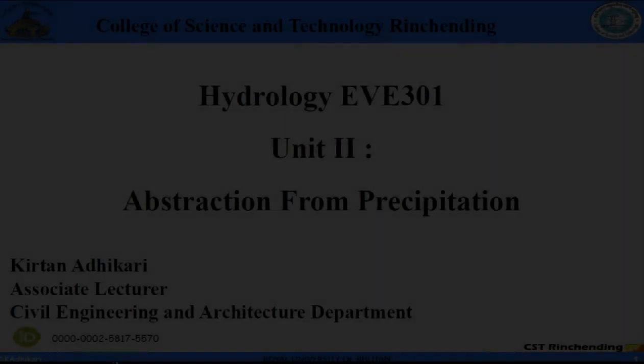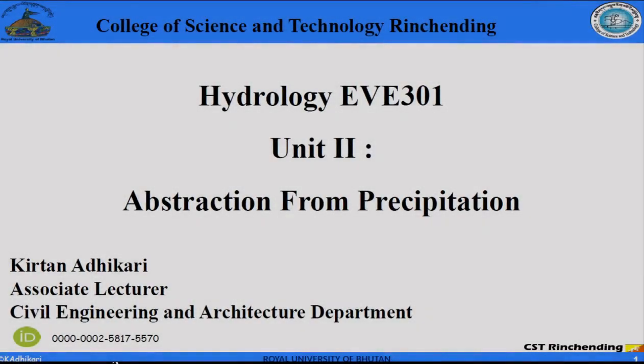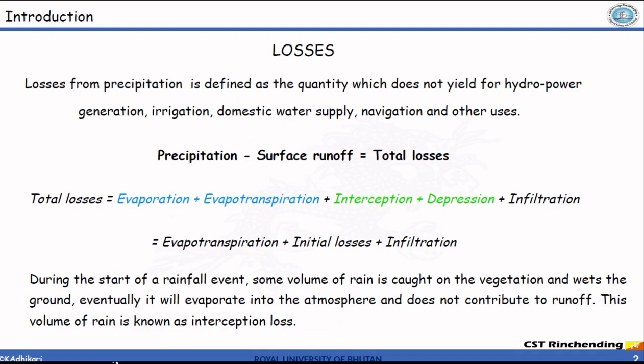Today we will begin with a new unit: abstraction from precipitation. In layman's terms, abstraction means losses. Losses from precipitation is defined as the quantity which does not yield for hydropower generation, irrigation, domestic water supply, navigation and other uses. Mathematically, precipitation minus surface runoff equals total losses, and the units are in volume — meter cube or kilometer cube, though mostly we use meter cube.